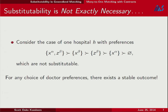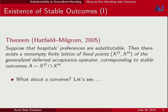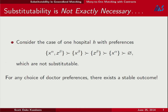It actually turns out that for any choice of doctor preferences, there's going to be a stable outcome. So here we have non-substitutable hospital preferences for which stable outcomes are still guaranteed. An immediate converse — that existence of stable outcomes requires substitutability — isn't quite going to work because I've given you a counterexample. We need to uncover the structure of where these types of examples come from.